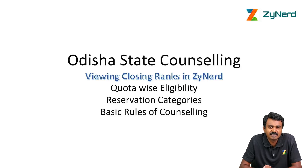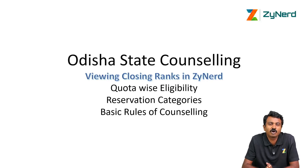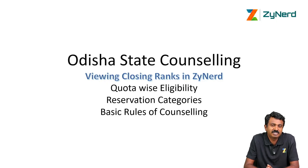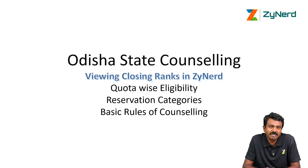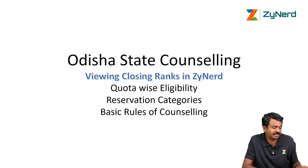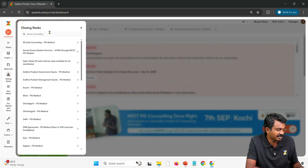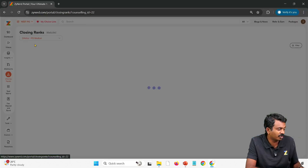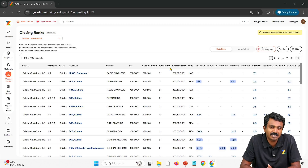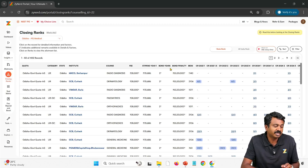Hi everyone, welcome to Zynerd's demo on how to view Odisha's closing ranks in Zynerd. Odisha has different quotas and quota-wise eligibility, which we will also be looking at here. You go into Insights and look at closing ranks, then start with Odisha — it will take you to the Odisha closing ranks view.